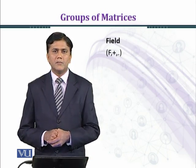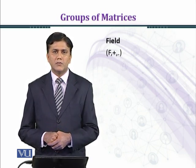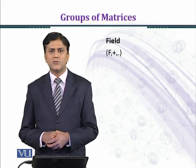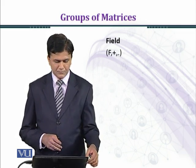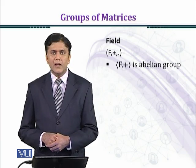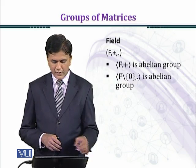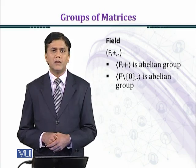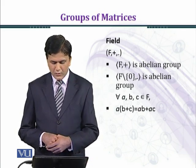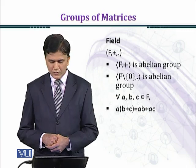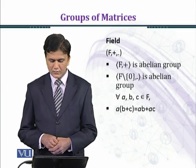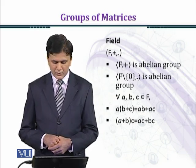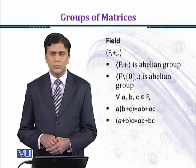Now we define a field. A field is a set together with two binary operations, addition and multiplication — not ordinary addition and multiplication. The set F under addition forms an abelian group, and the set F minus {0} under multiplication forms an abelian group. The left distributive law holds: for every a, b, c in F, a(b + c) = ab + ac. The right distributive law also holds: (a + b)c = ac + bc.